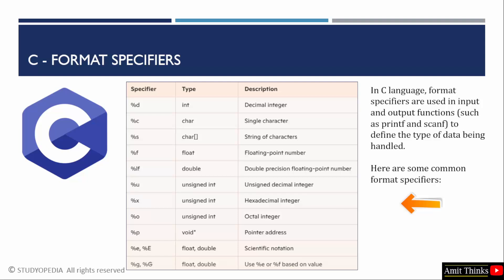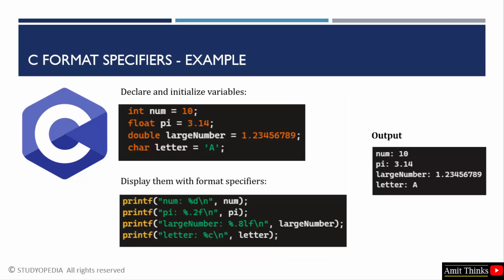Let us see some examples to understand. Let's say you are declaring and initializing variables. Here, we have declared first an integer variable, then a floating point. After that, a double and in the end, a character, a single character.